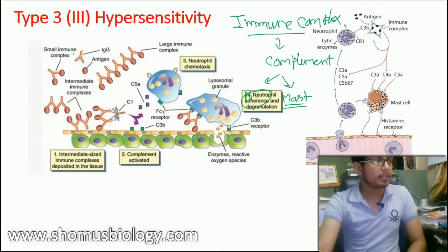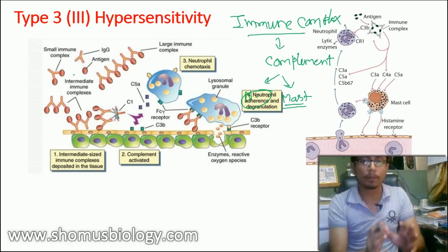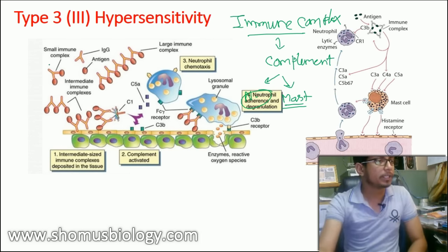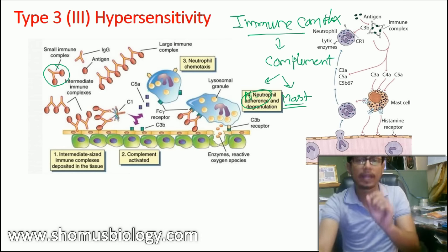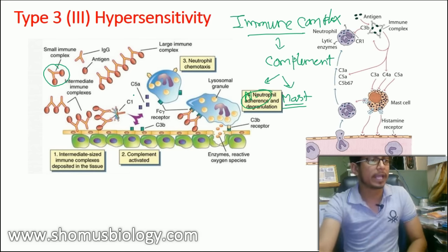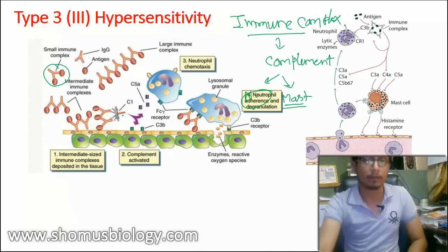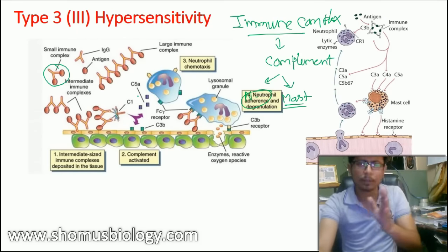The process begins with small immune complexes — the complex between an antigen and an antibody. Once antigen attaches to antibody, large immune complexes form. Small proteins present in our serum, known as complement proteins, come in and become fixed when an antigen-antibody complex is present. This complement fixation then proceeds to cleave those proteins.